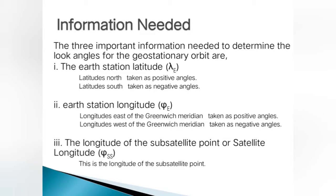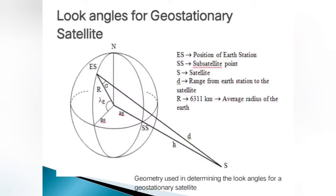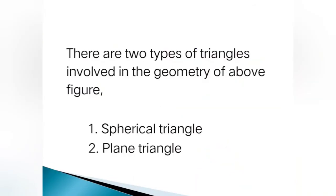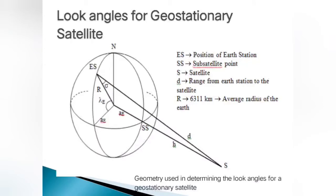Let us consider the geometry for look angles of the geostationary orbit. The values are denoted: E for the earth station, SS for the subsatellite point, S for the satellite, and small d for the range — that is, the distance from the earth station to the satellite. Capital R is the known value, that is, the average radius of the earth.